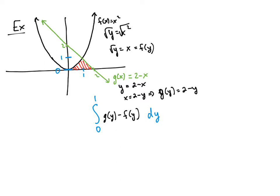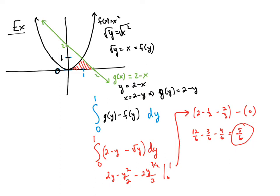We integrate g(y) minus f(y) dy from 0 to 1: the integral from 0 to 1 of (2 − y − √y) dy. The greater function in that interval is g(y) = 2 − y and the smaller is f(y) = √y. Evaluating this integral, we indeed end up with 5/6, the same result as the previous method.